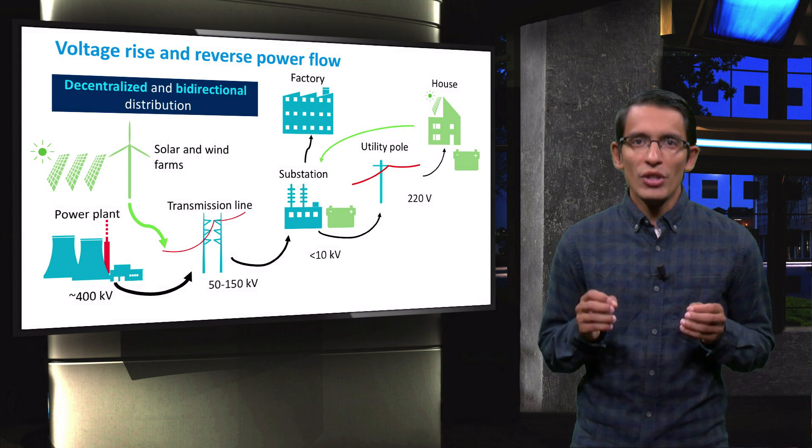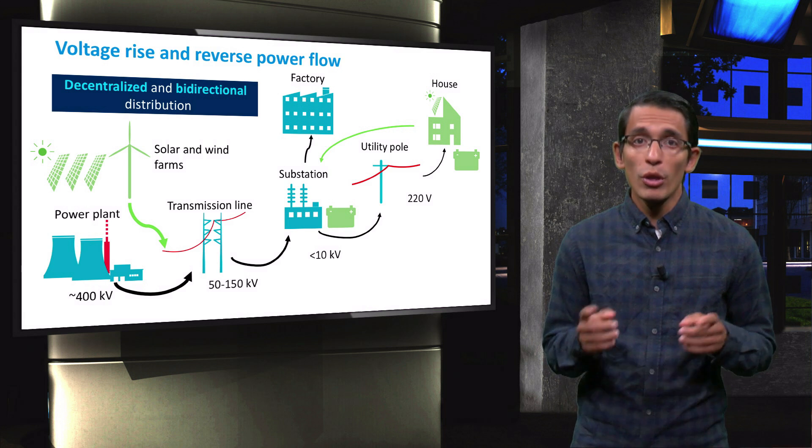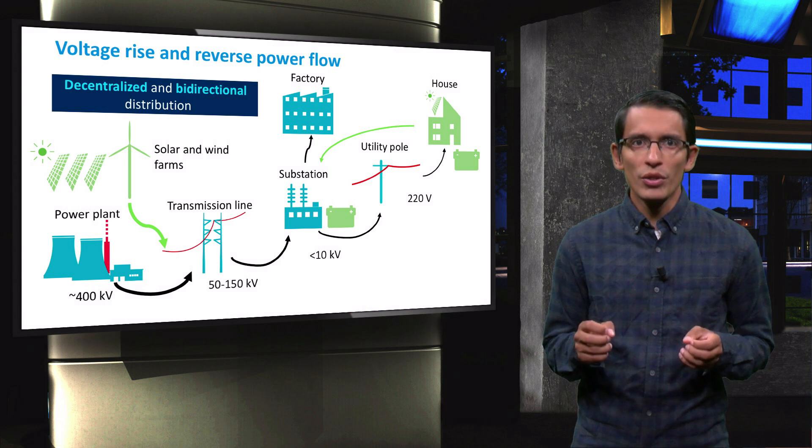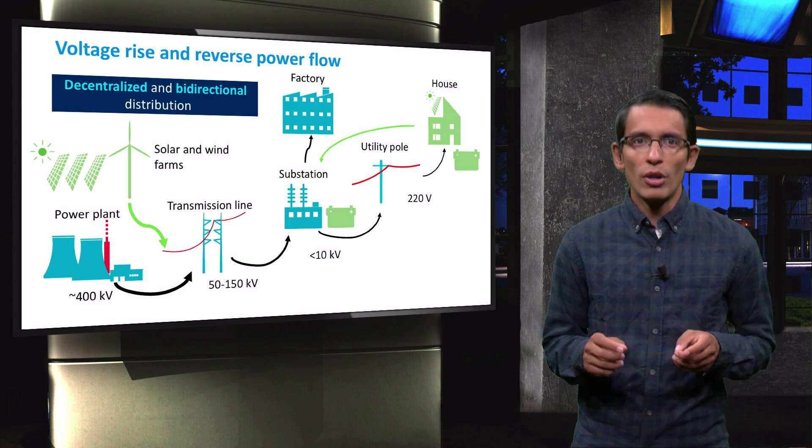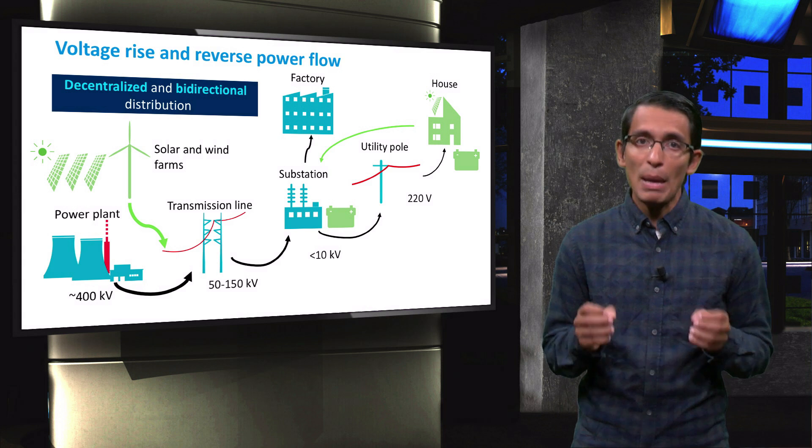If distributed generation systems result in a reverse power flow through the regulator, tap changing control systems in the transformer which regulate the turn ratio and therefore the voltage inputs and outputs may become unstable.